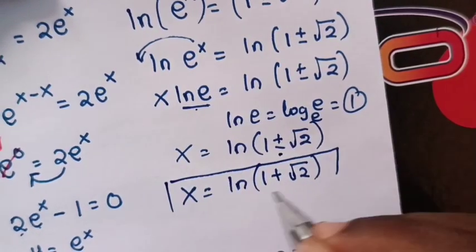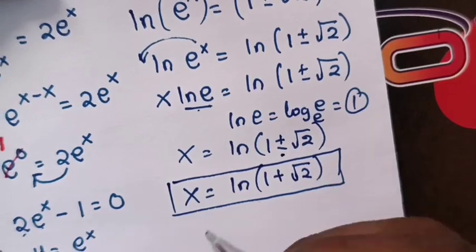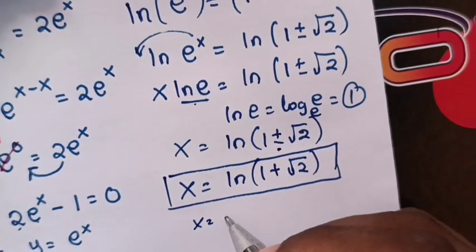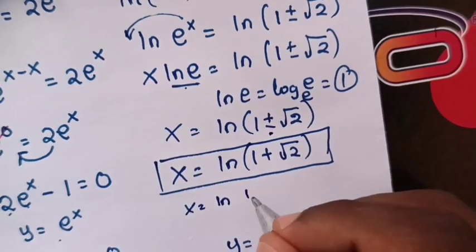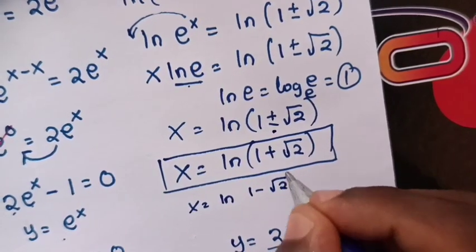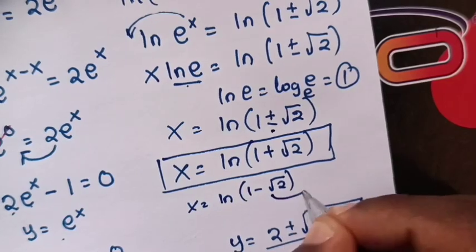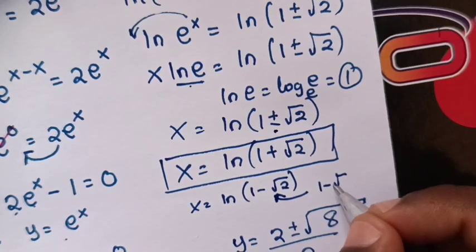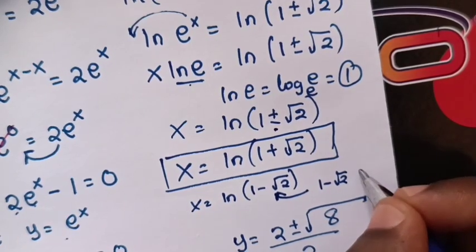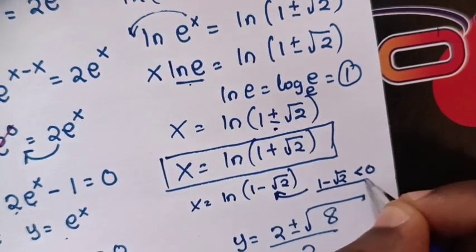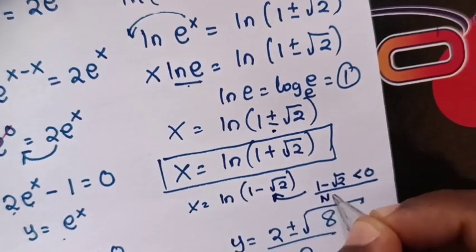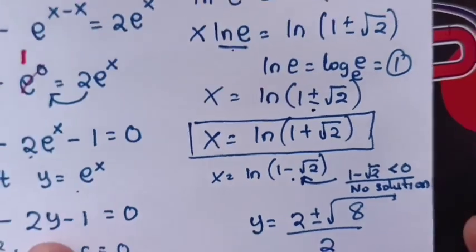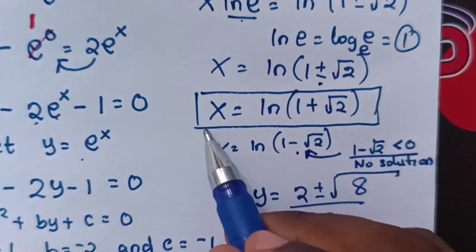This is the first solution. But when it's minus, x would equal ln of 1 minus square root of 2, which is impossible because the argument of ln should not be negative or less than 0. So our only solution is x equals ln of 1 plus square root of 2.